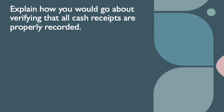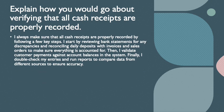The next question is: explain how you would go about verifying that all cash receipts are properly recorded. I always make sure that all cash receipts are properly recorded by following a few key steps. I start by reviewing bank statements for any discrepancies and reconciling daily deposits with invoices and sales orders to make sure everything is accounted for. Then I validate customer payments against account balances in the system. Finally, I double-check my entries and run reports to compare data from different sources to ensure accuracy.